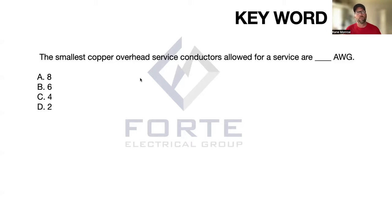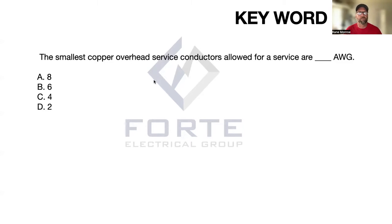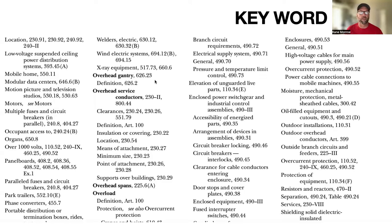We need to go to the back of our book in our keyword index and look up 'overhead service conductors.' This example is out of the 2017 code. If you're using the 2020 or 2023, it may be slightly different, but the concept is the same throughout your whole career until a major change comes, and there hasn't been one proposed yet on the keyword index.